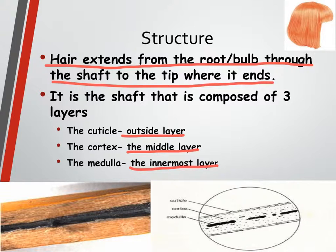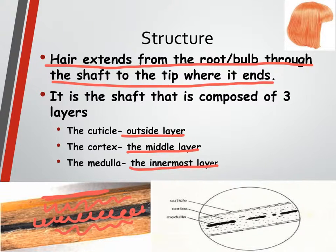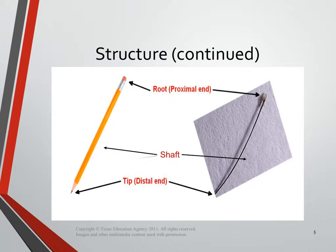If you break a pencil in half and look at it, the paint that you hold on to on the outside would be your cuticle. The cortex would be the woody section in the middle, and the medulla itself would be the pencil lead — the dark section right in the center. So your three layers of hair are just like the three sections of a pencil. This particular slide compares the hair to a pencil: the root would be like the eraser, the tip would be like the point, and everything in between is called the shaft — the body of the pencil.